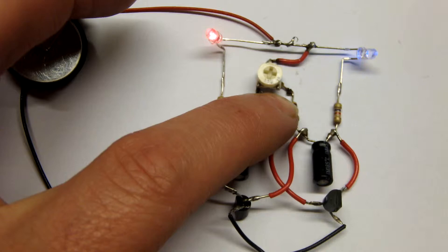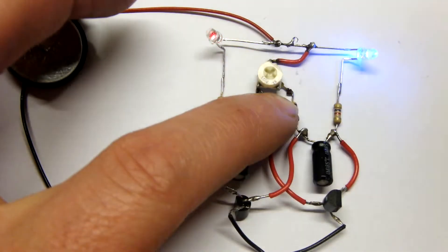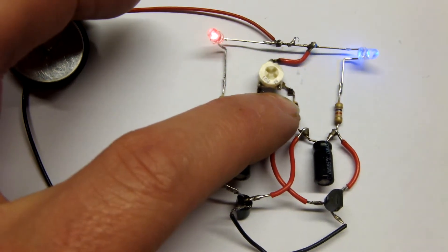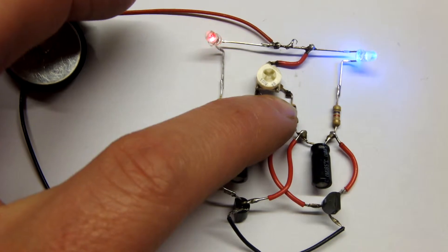These are going to be used for R2D2's colour changing eyes. At the front he seemed to have a red and a blue alternating flash and at the back he seemed to have a yellow and a green alternating flash.